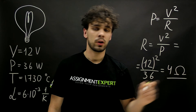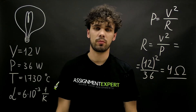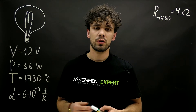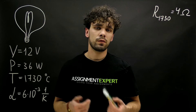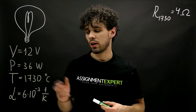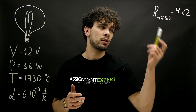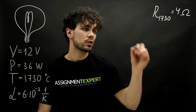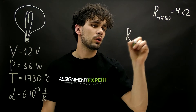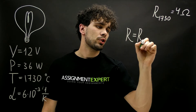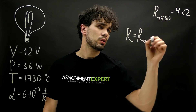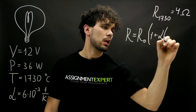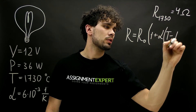So here we found the resistance of the lamp at the operating temperature. We have the temperature coefficient of resistance, which is given for the reference temperature zero degrees Celsius. There is a formula that relates the resistance at the reference temperature with the resistance at, in our case, 1730 degrees Celsius. The formula looks like this: R equals R zero, which is the reference resistance, times one plus alpha times T minus T zero.